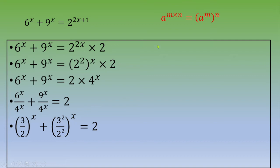We apply the same rule and we get 3 over 2 power x plus 3 over 2 power 2x equals 2.